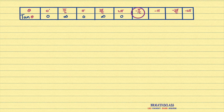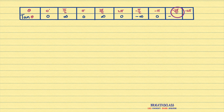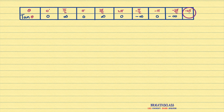Tan of minus pi by 2 — we know that tan of minus pi by 2 is minus tan pi by 2. Tan pi by 2 value is infinity, so tan of minus pi by 2 is minus infinity. Tan of minus pi is minus 0, which is just 0. Tan of minus 3pi by 2 is minus infinity. Tan of minus 2pi is minus tan 2pi, which is minus 0, which is just 0.